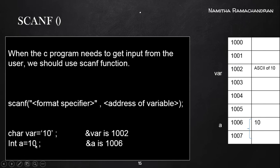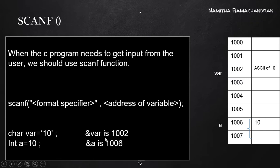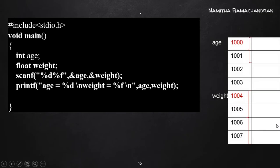So int a = 10 means assign the value 10 to the memory location pointed by 'a'. Since 'a' is an integer variable, it points to 1006 and occupies two consecutive bytes starting from 1006, storing the value 10 in binary form. Now we can consider the program example.